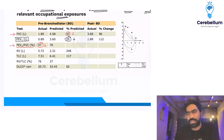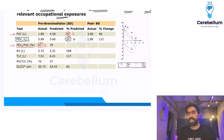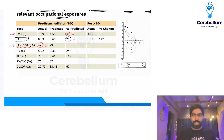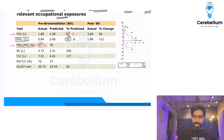FVC is reduced. Whenever FVC is low, it is suggestive of restriction. To confirm restriction, the next step is to do TLC — total lung capacity. We need TLC to confirm whether this is truly restriction.